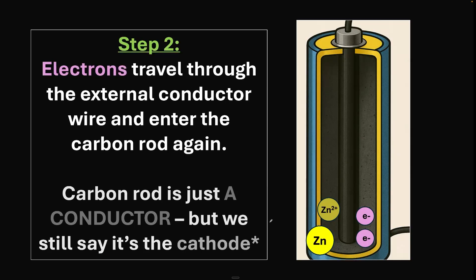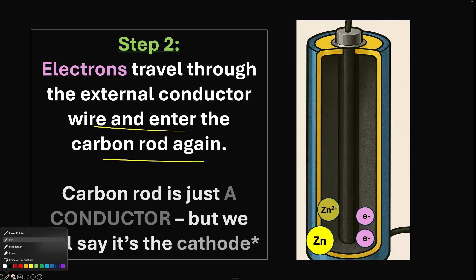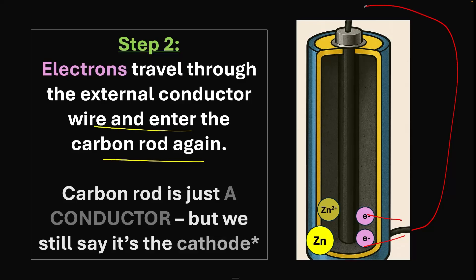Next, these electrons travel through the external conductor wire and enter the carbon rod again. They're entering the wire, traveling entirely through, and then entering the carbon rod into the battery. That's how they power the equipment. The carbon rod is just a conductor. It doesn't take place in the reaction, which is what a normal cathode would do. But we still say it's the cathode because it takes in the electrons.